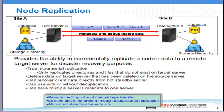Hi, my name is Trisha Zhang, and today we're going to talk about Node Replication. Node Replication is a new feature in TSM 6.3. It was introduced to provide the ability to restore files from a secondary server should something happen to your primary server. The nice thing about Node Replication is it takes the files that you specify off of site A and incrementally replicates that data to site B.